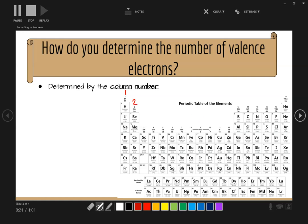We are going to move all the way over to column 13. Every element in column 13 has three valence electrons. Column 14 has four valence electrons. 15 has five, 16 has six, 17 has seven, and 18 has eight.